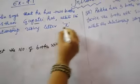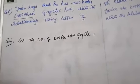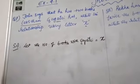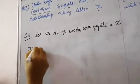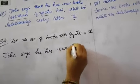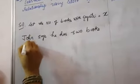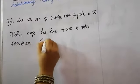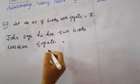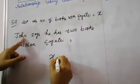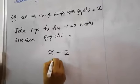The question asks us to use the letter x as the variable. We can use any letter, but since the question specifies x, we use only x. John says he has two books less than Gayatri. Gayatri has x books. Less than means minus two books, so the expression for John's books becomes x minus 2.